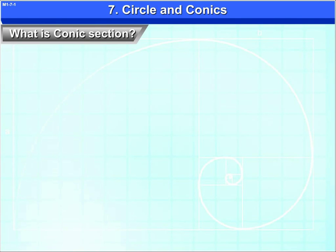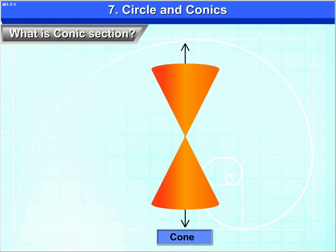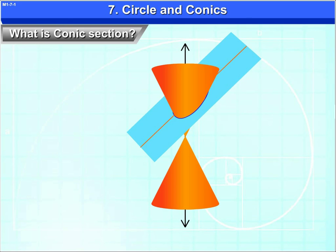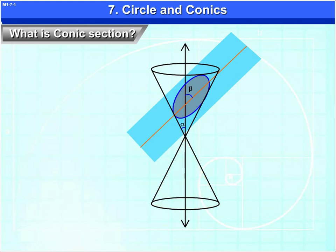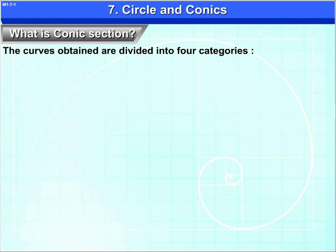What is a conic section? Consider a cone and one plane. If we cut the cone with the plane, depending upon the angle alpha and beta, where alpha is the angle between the axis and generator of the cone, and beta is the angle between the axis of cone and the plane, the curves obtained are divided into four categories.